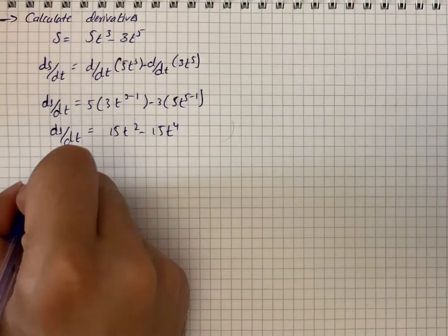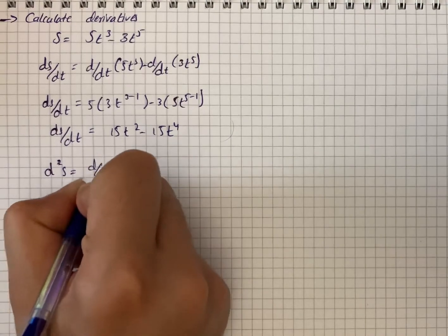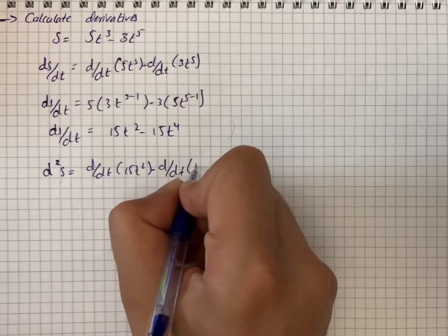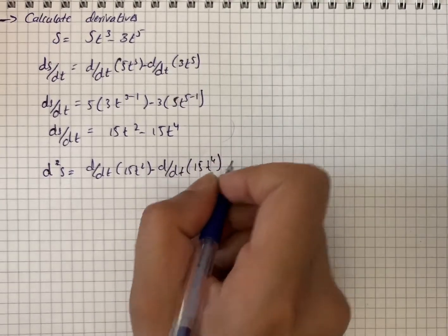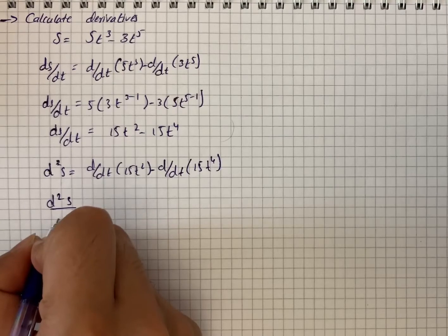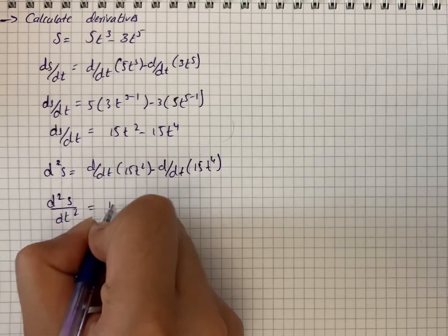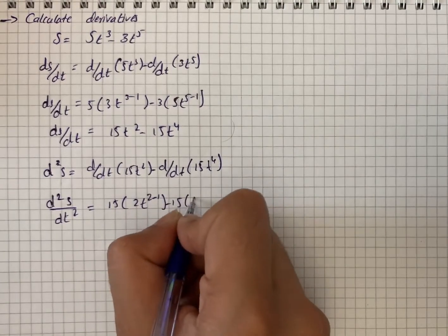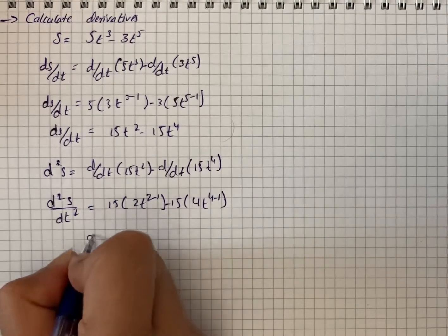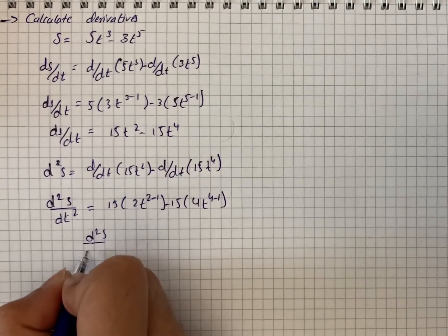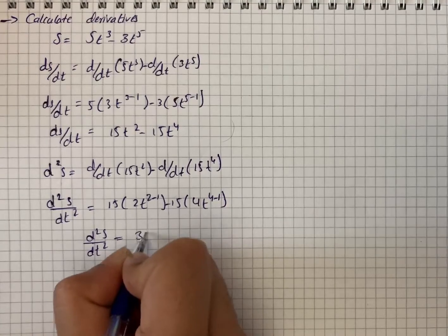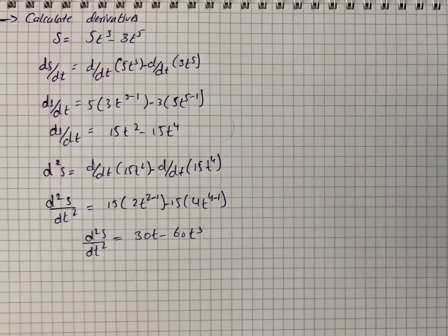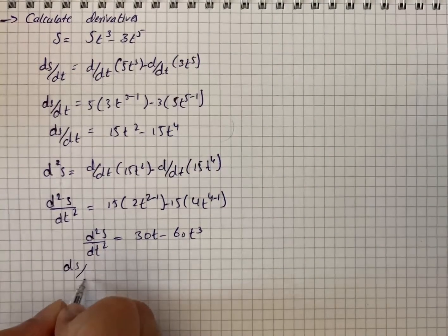For the second derivative, d²s/dt² equals d/dt of 15t² minus d/dt of 15t⁴. Applying the power rule again, d²s/dt² equals 15 times 2t minus 15 times 4t³, giving d²s/dt² equals 30t minus 60t³.